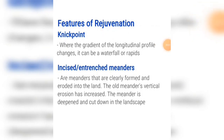The third feature is a knick point, which is where the gradient of a longitudinal profile changes. It can either be a waterfall or rapids. The fourth and final feature is an incised or entrenched meander — meanders that are clearly formed and eroded further into the land than normal, where the old meander's vertical erosion has increased and the meander is deepened and cut down into the landscape.